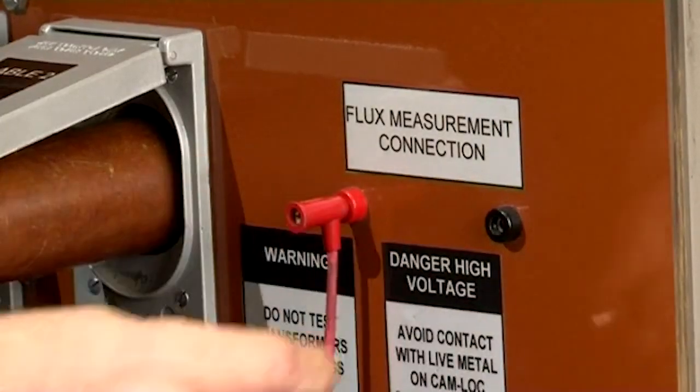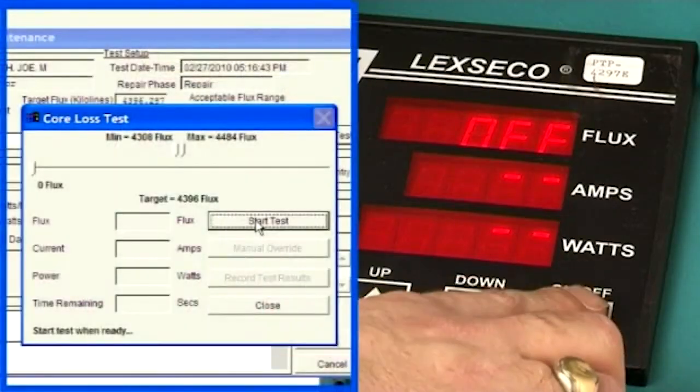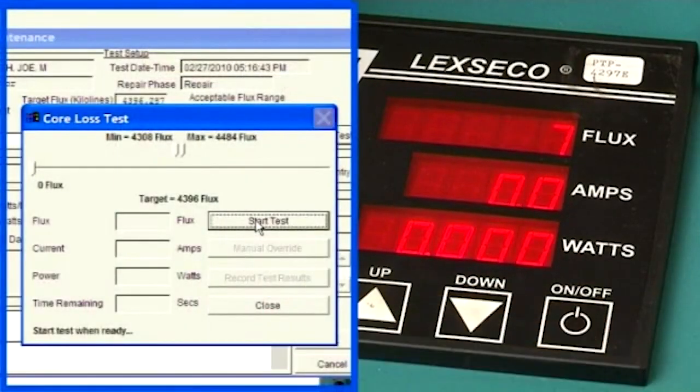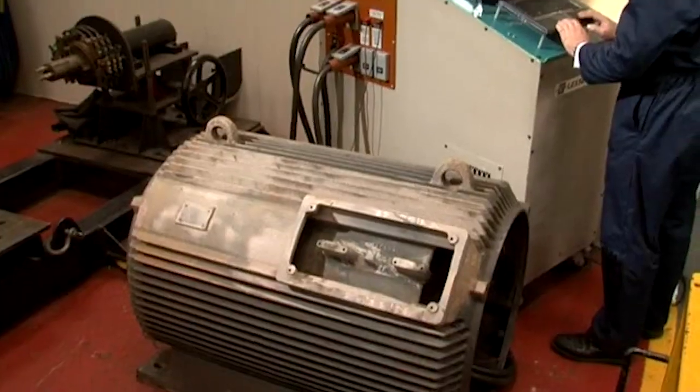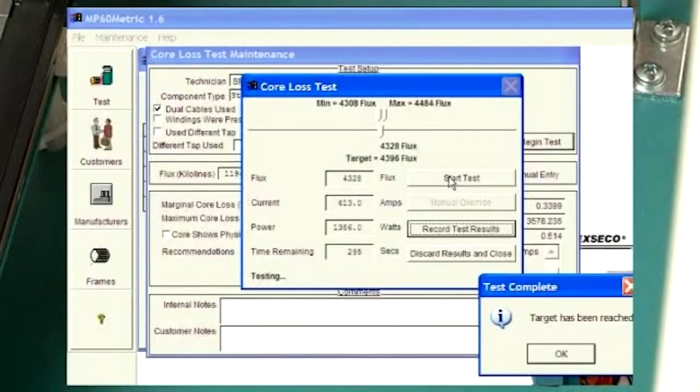The flux measurement leads are then connected. The test begins. When the target current is reached, the core condition is analyzed and recorded.